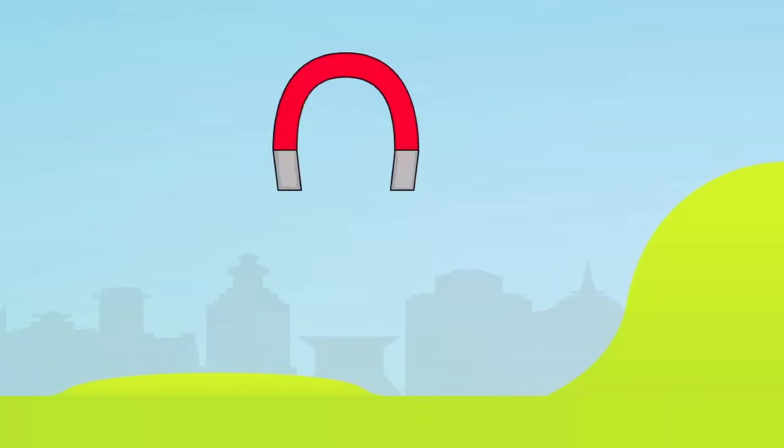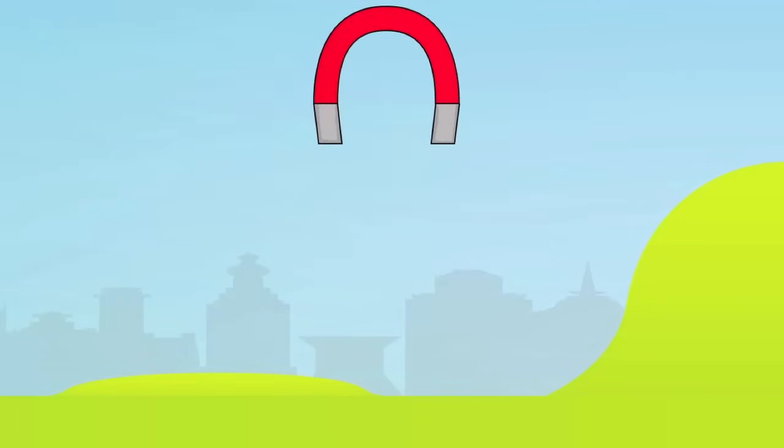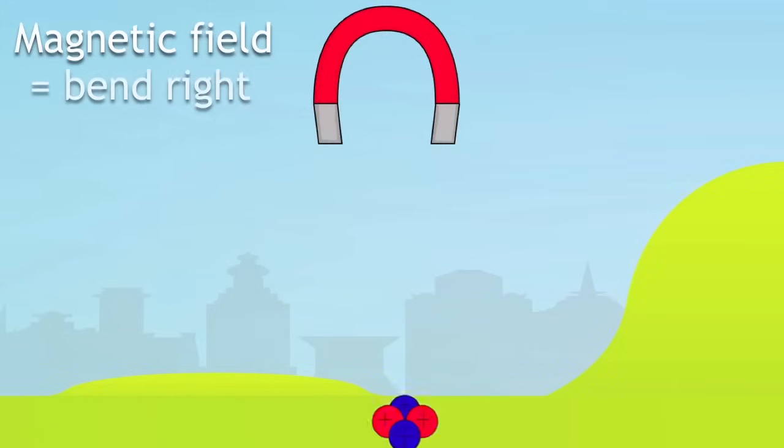It's also strongly affected by a magnetic field. So here we've got a whole beam of alpha particles, and these alpha particles are going through a magnetic field. And when they go through the magnetic field, they bend quite a lot. This tells us two things.